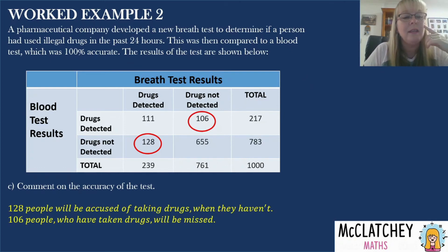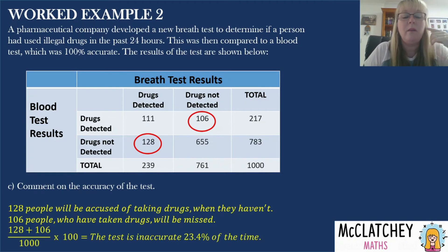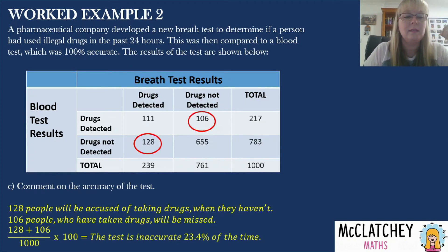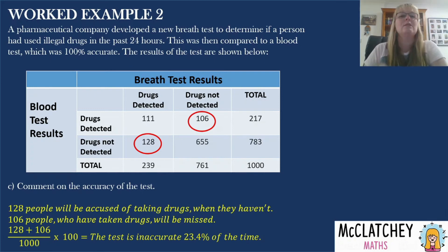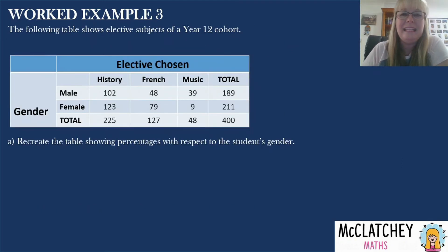Adding these two numbers together — 128 false positives and 106 false negatives — and working out what percentage of all people tested this represents, the breath test will be inaccurate 23.4% of the time. That's a significant issue, and it's unlikely this pharmaceutical company will be able to get the breath test approved — it's simply not accurate enough.